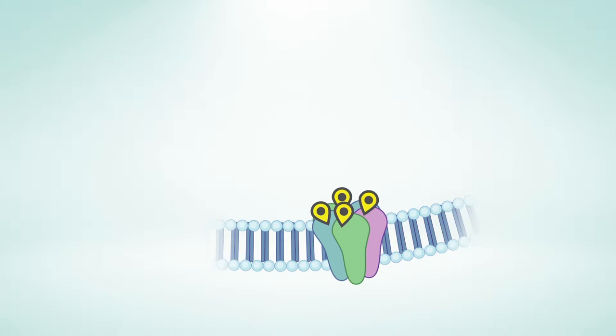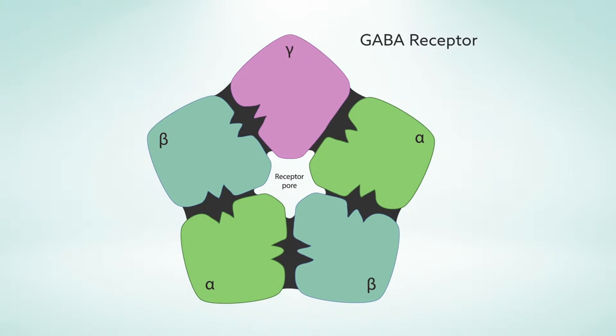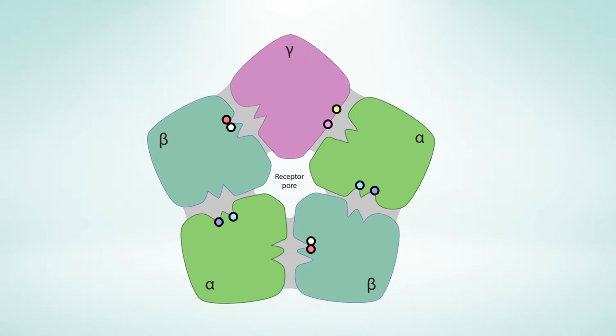To map the precise points of contact, the Mass General researchers used two separate genetic techniques to modify the structure of the GABA receptors. The scientists selected six amino acids for testing. These were located in pockets between the five subunits that surround the central pore.